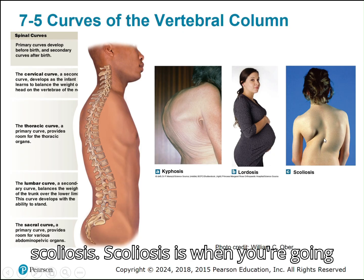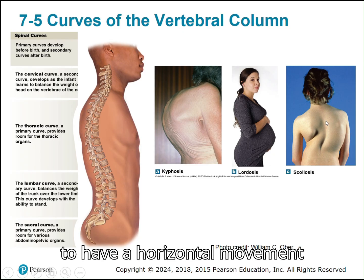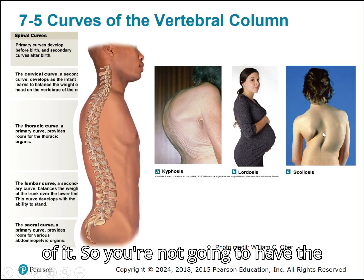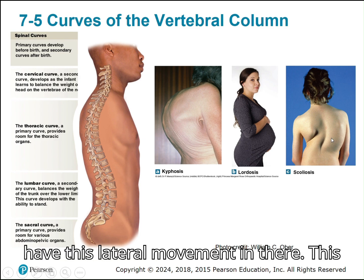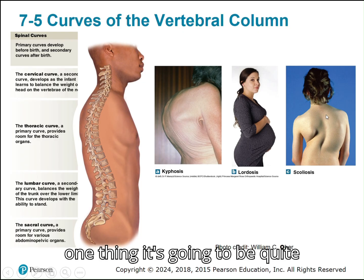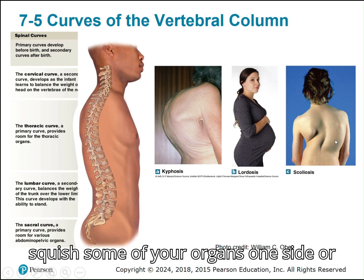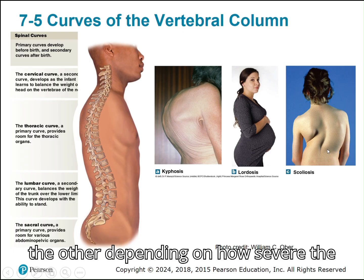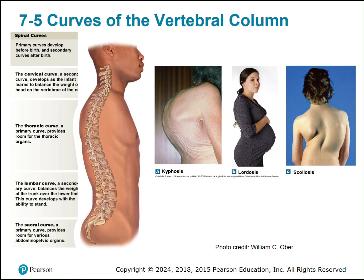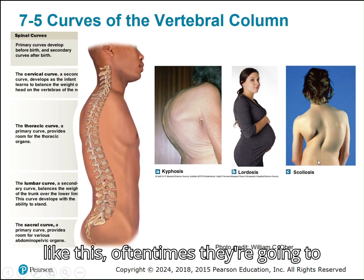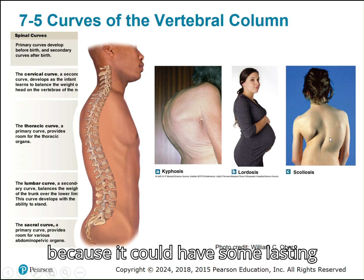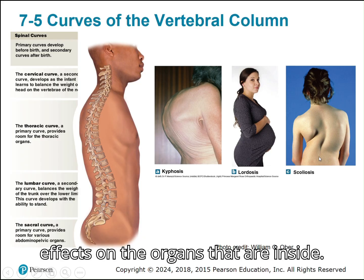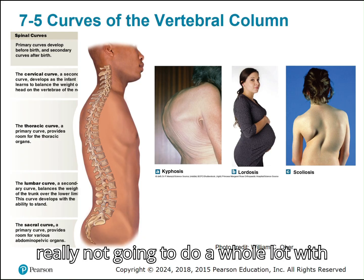Scoliosis is when you have a lateral or horizontal movement of the spine — you won't have the straight spine you'd normally see; part of it has this lateral movement. This is detrimental because it's quite uncomfortable and it squishes organs to one side or the other depending on severity. Many cases are not serious, but severe scoliosis often requires surgery, such as placing a rod to straighten the area, due to lasting effects on internal organs.